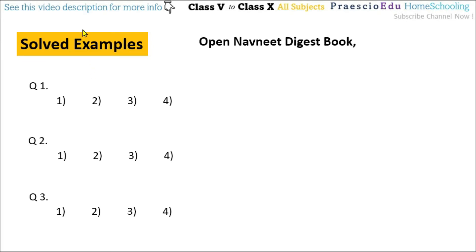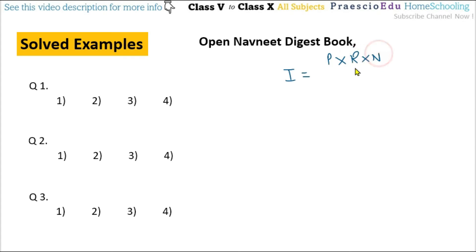Question number one: what is the interest on 5000 rupees at 12% per annum for 2 years? As we know from the lecture, the formula for simple interest is I = P × R × N / 100, where P is the principal value, R is the rate of interest (percent per annum), and N is the period in years.